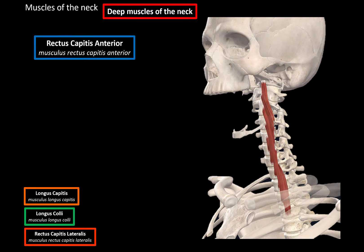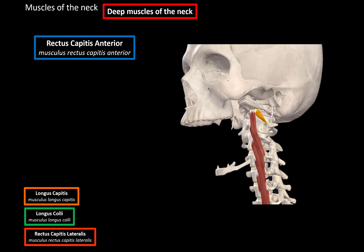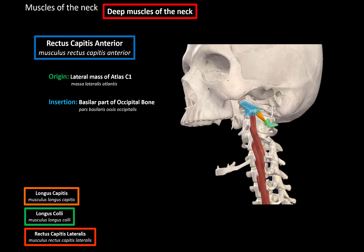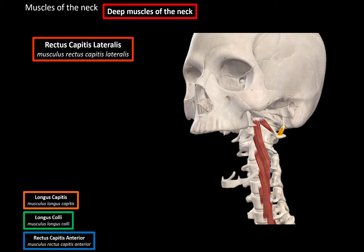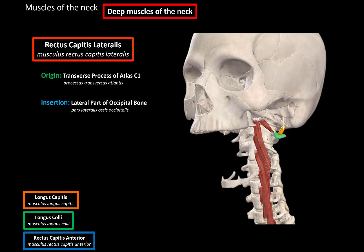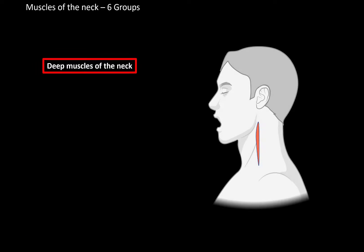Then we have the rectus capitis anterior, a tiny muscle located just underneath the skull. It originates from the lateral mass of Atlas (C1) and inserts at the basilar part of the occipital bone. Unilateral contraction causes lateral flexion of the head; bilateral contraction causes ventral flexion. Then we have the rectus capitis lateralis, also a tiny muscle, which originates from the transverse process of Atlas (C1) and inserts at the lateral part of the occipital bone. Its function is primarily lateral flexion of the head. That covers all the deep muscles of the neck.